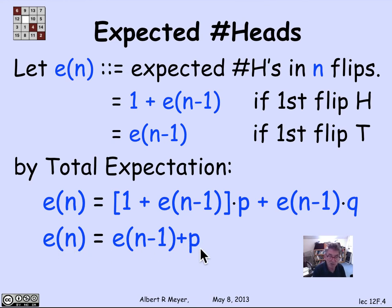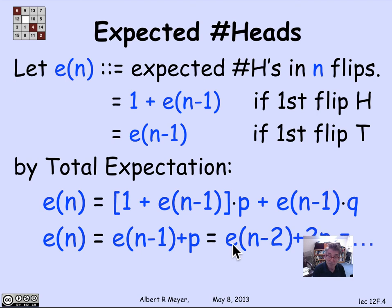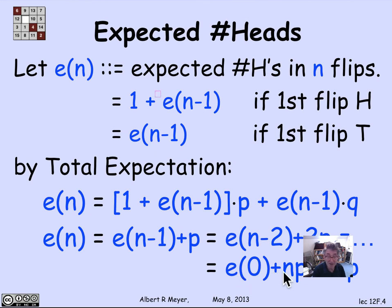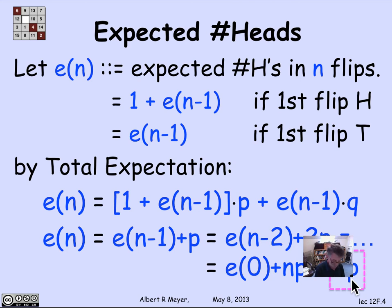This is a very simple recursive definition of e of n — subtracting 1 from n adds a p. If I subtract 2 from n, I add another p, getting 2p. Continuing all the way to 0, I've gotten n times p. And I've just figured out what I was familiar with already, previously derived by differentiating the binomial theorem: the expected number of heads in n flips is n times p. This time I got it in a more elementary way by appealing to total expectation.